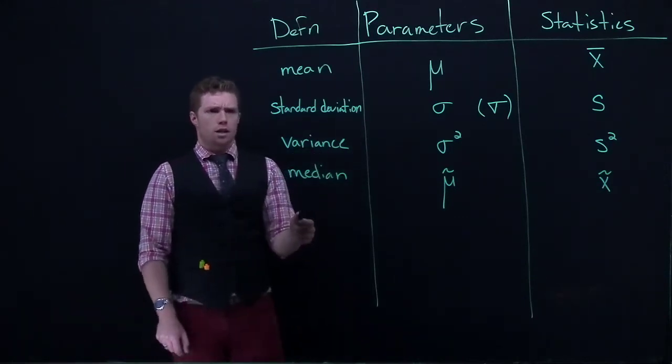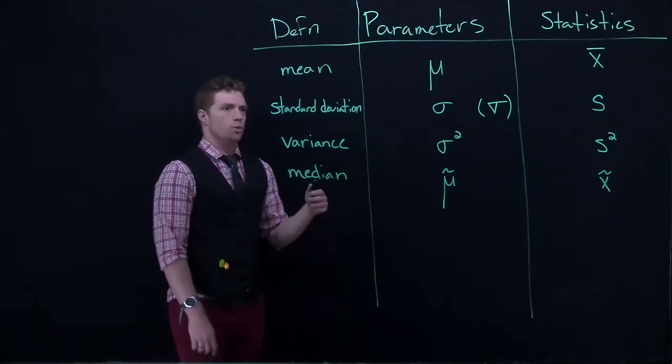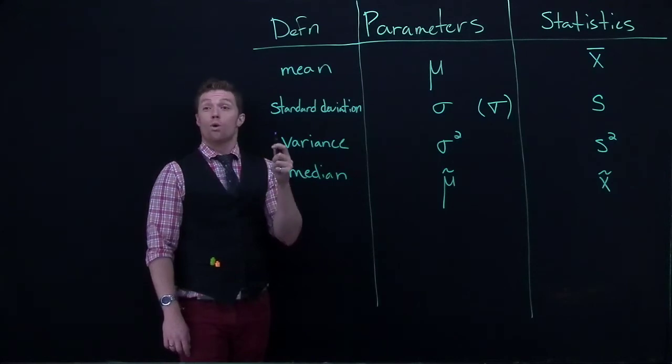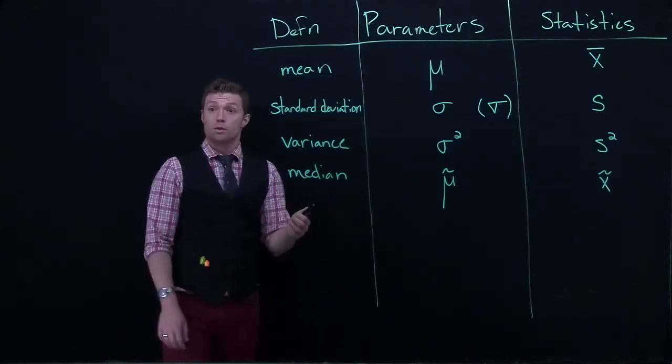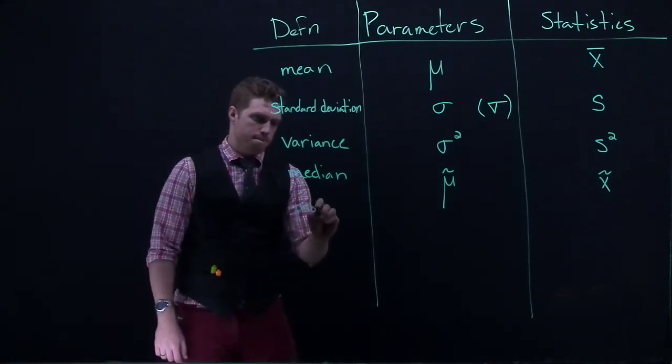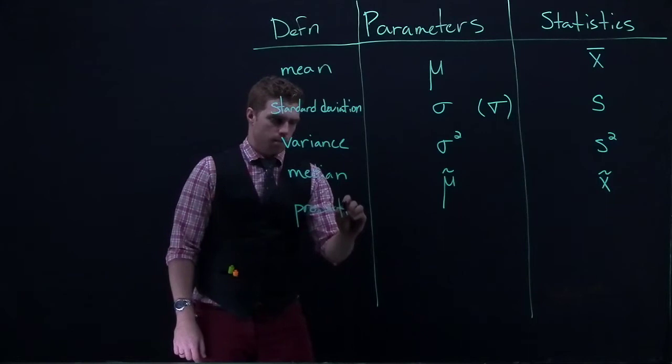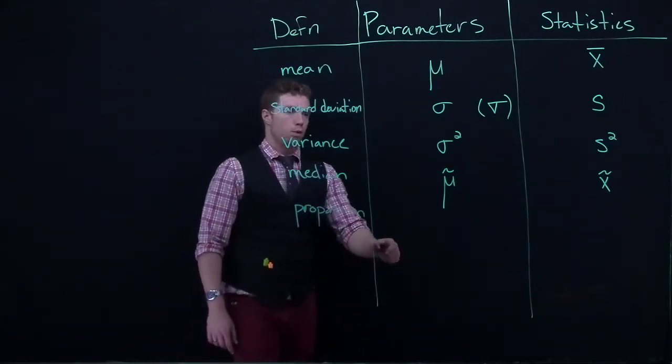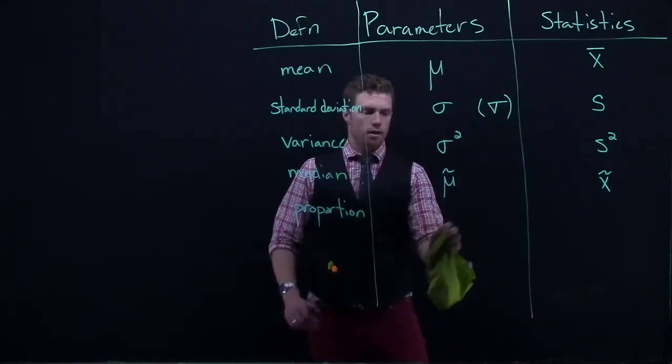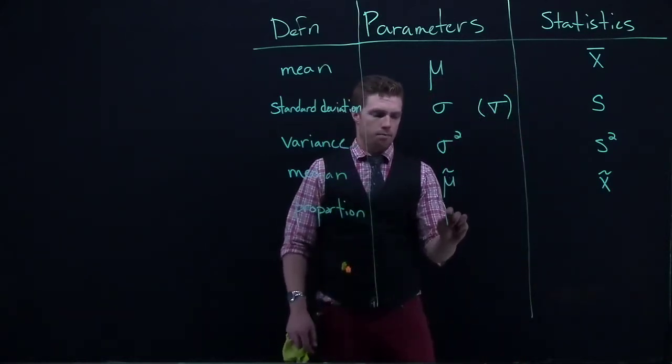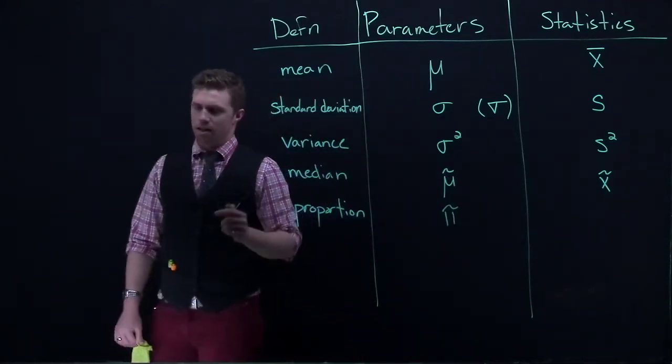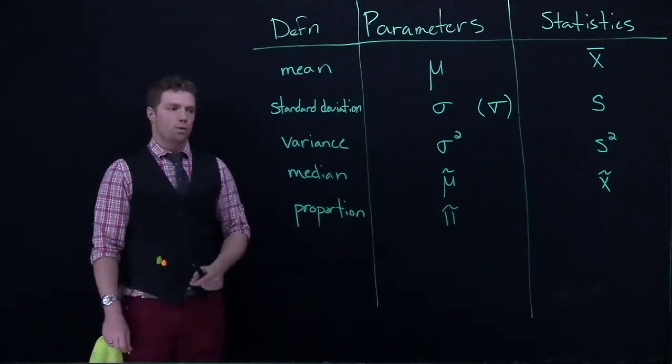Alright, the next one that we need to talk about, let's go ahead and dive into our definition for our categorical data. So when we're dealing with categorical data, most of the time we're talking about proportions. So we'll put in here proportion. Okay, and when we are talking about proportions here, we are going to be dealing with the Greek letter of pi. Now you do have to remember that pi also, in mathematics is dealing with circles. It's our 3.14.